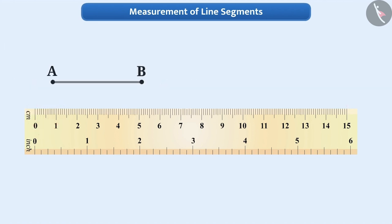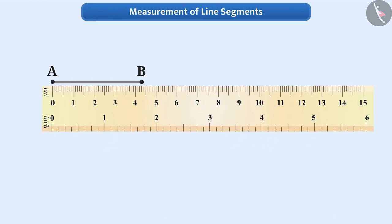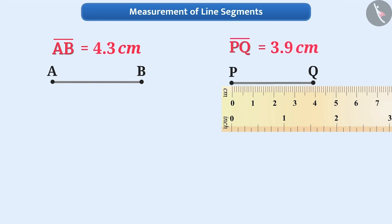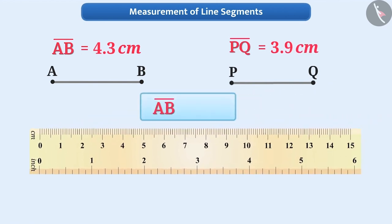To measure the length of the line segment, we keep the zero mark of the ruler on one of its endpoints and, by keeping the ruler parallel with the line segment, we find out the position of the other point of the line segment on the ruler. In this way, we can say that line segment AB is equal to 4.3 centimetres and line segment PQ is equal to 3.9 centimetres. Now, we can say that AB is greater than PQ.